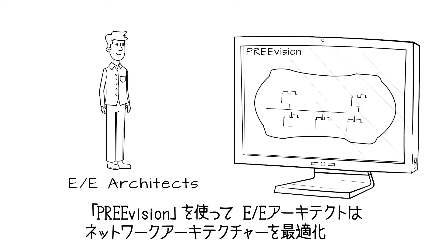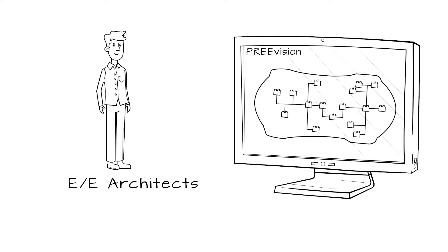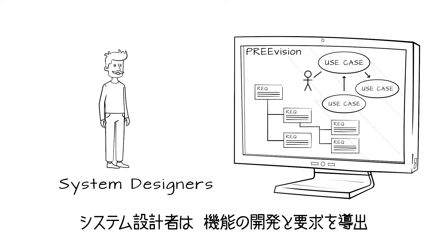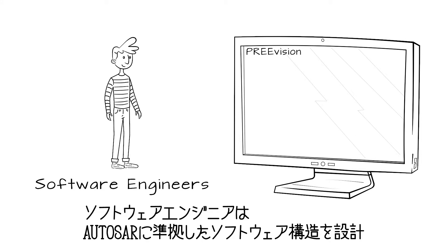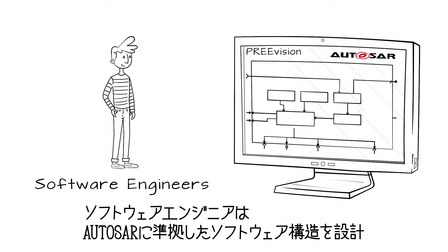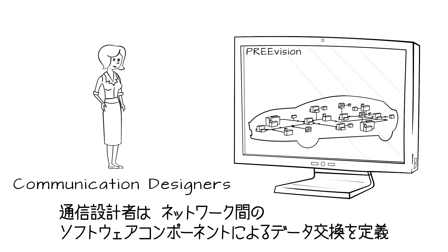With PreVision, EE architects design and optimize the onboard network architecture. System designers develop vehicle functions and derive corresponding requirements. Software engineers design an AUTOSAR-compliant software structure, consisting of interconnected software components and their interfaces. Communication designers define how software components exchange data across networks within the vehicle.